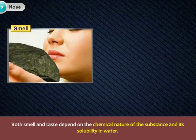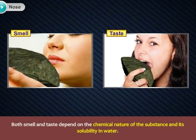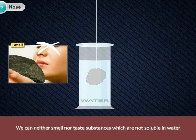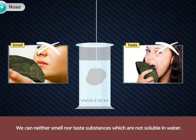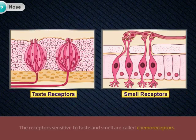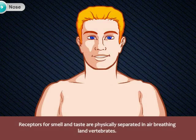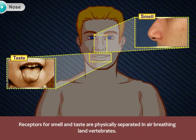Both smell and taste depend on the chemical nature of the substance and its solubility in water. We can neither smell nor taste substances which are not soluble in water. The receptors sensitive to taste and smell are called chemoreceptors. Receptors for smell and taste are physically separated in air-breathing land vertebrates.